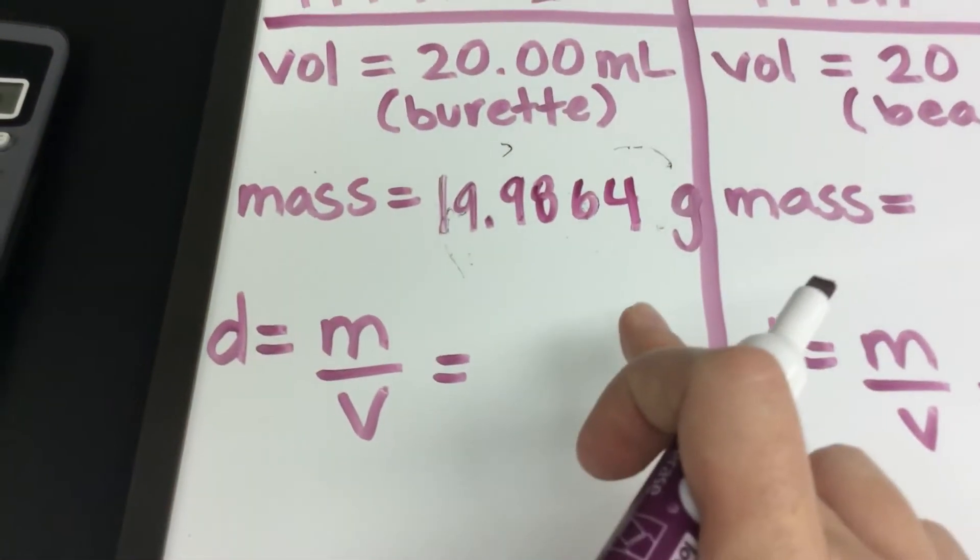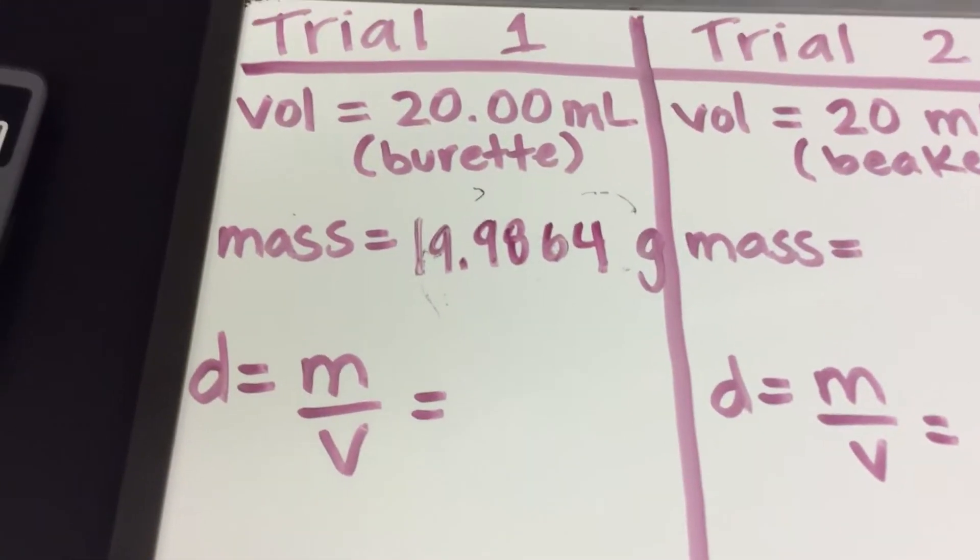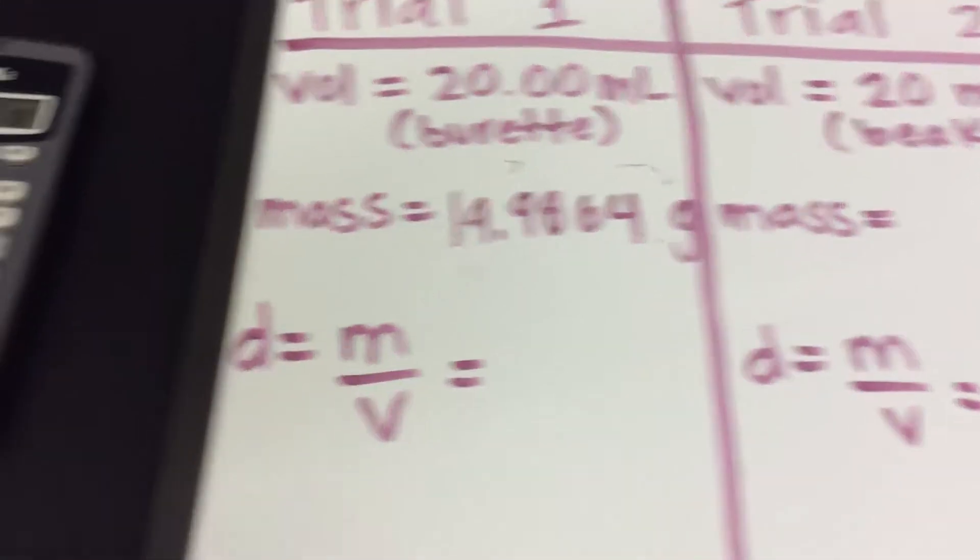We never, ever, ever round a mass from an analytical balance. Now what we're going to do is we're going to use this exact same dish again. Because we don't want to increase any sort of error. We want to make sure it's dry.